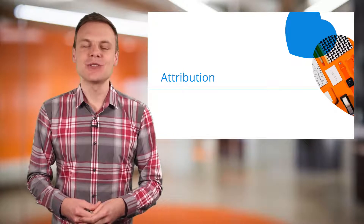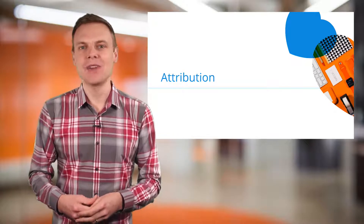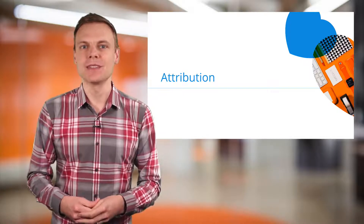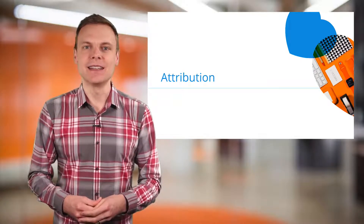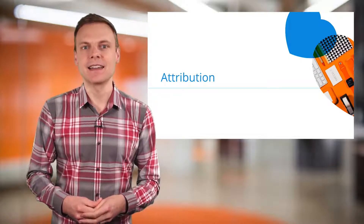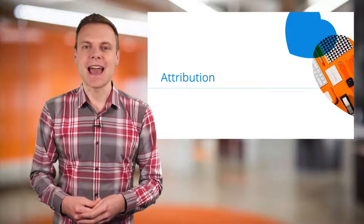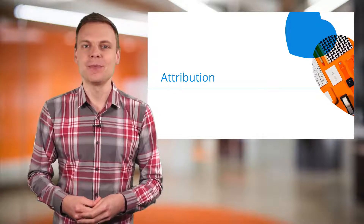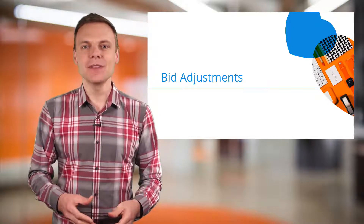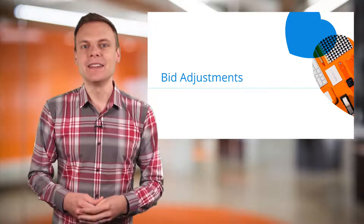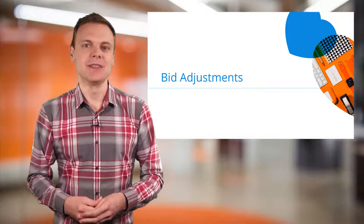You can choose from a range of attribution models inside your account, including last click, time decay and more. Number 3 is bid adjustments, which change the final bid by a percentage.